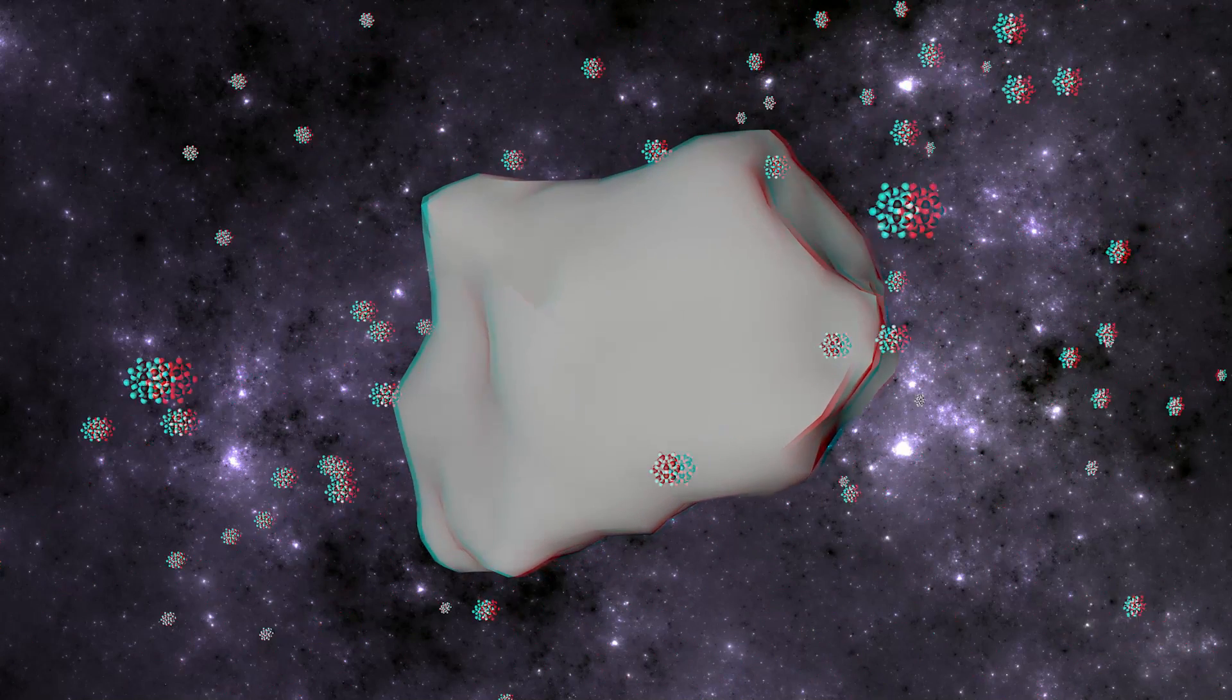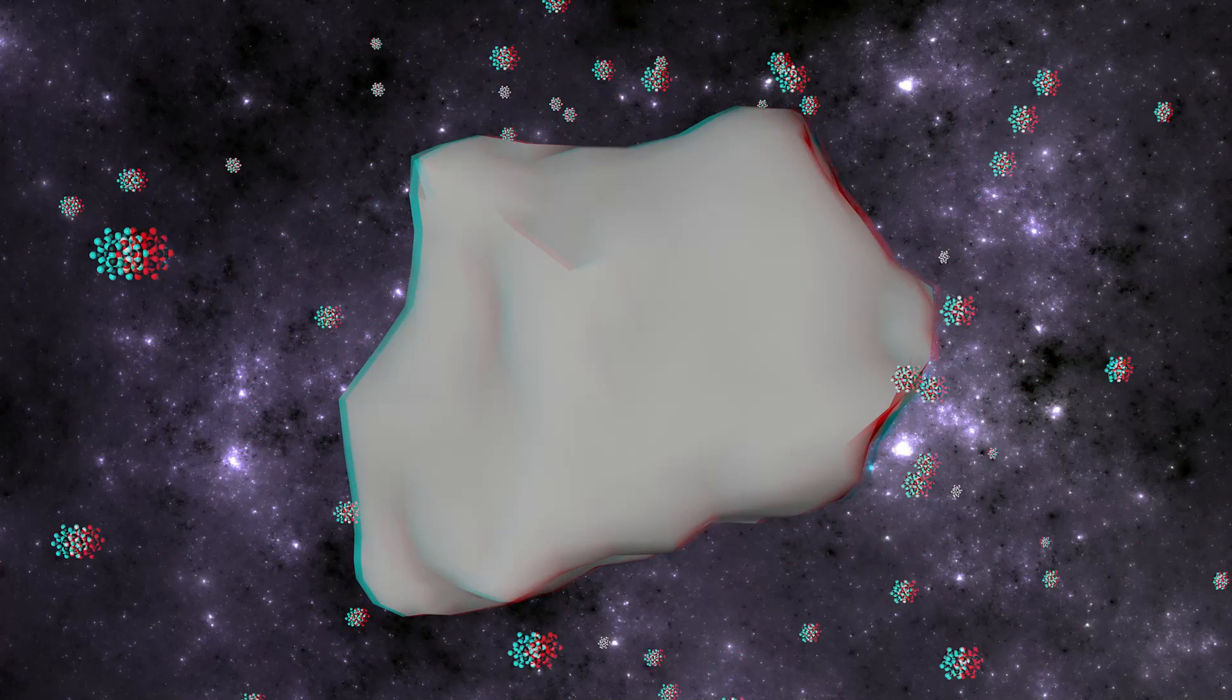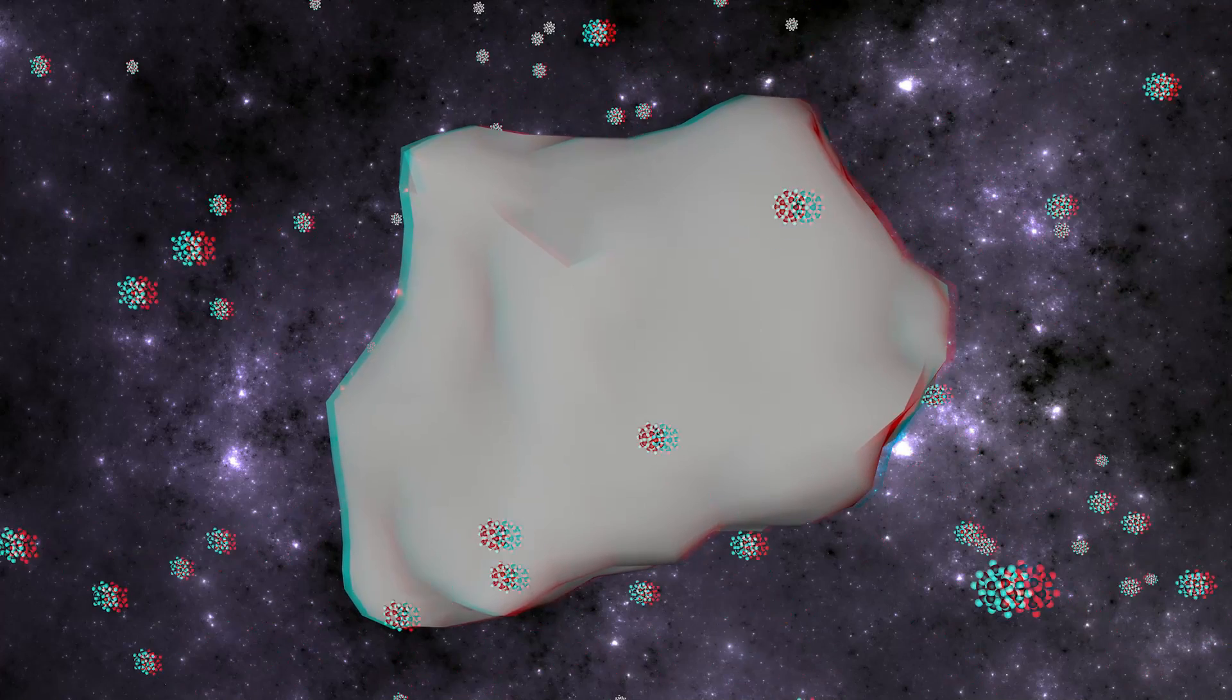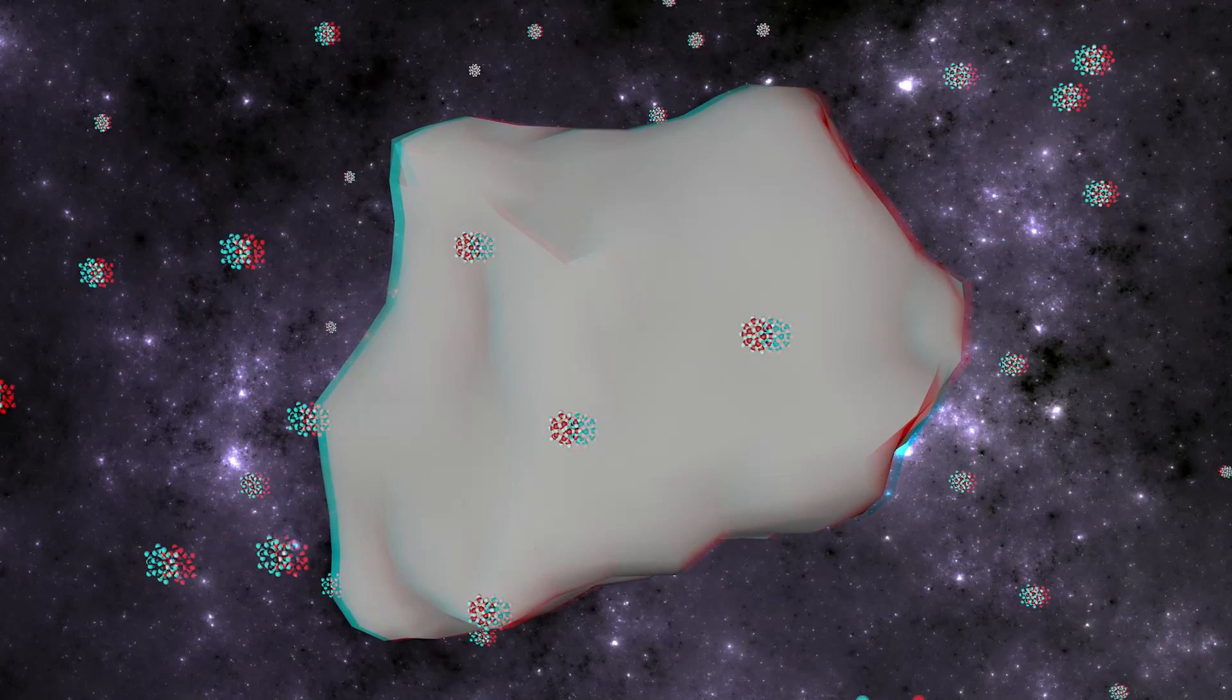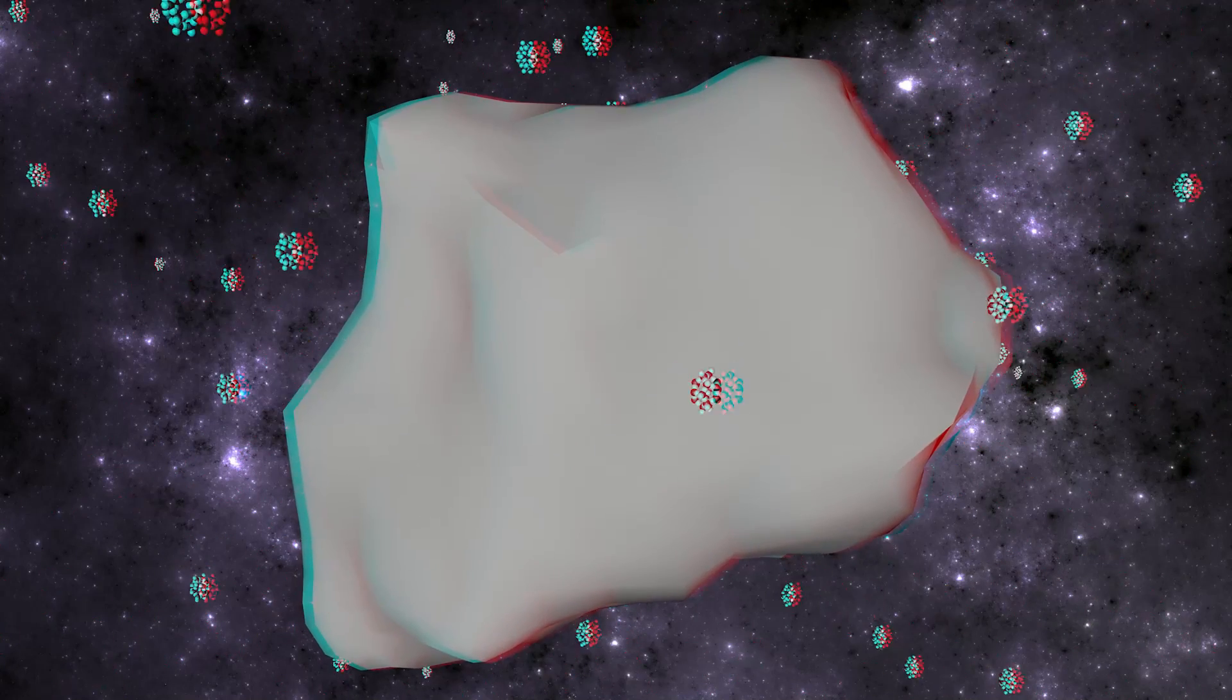Therefore, they are baryonic dark matter. Rydberg matter is a low-density substance, so one doesn't need a lot of it to explain dark matter compared with non-baryonic elementary particles such as WIMPs, axions, and neutrinos.